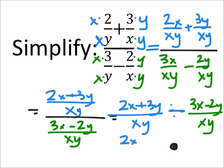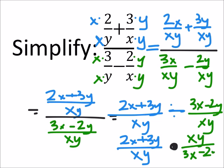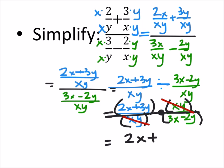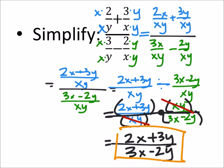Our dividend stays the same, 2x plus 3y all over xy, and now this becomes xy over 3x minus 2y. All right, now we're just multiplying these, and as it turns out this xy will cancel out this xy. That leaves us with in the numerator 2x plus 3y and in the denominator 3x minus 2y. And that right there is about as far as we can simplify. There's nothing we can factor out from the numerator or denominator which would then cancel out something else, even if we switch them around using the commutative property of addition.